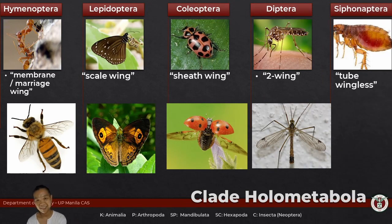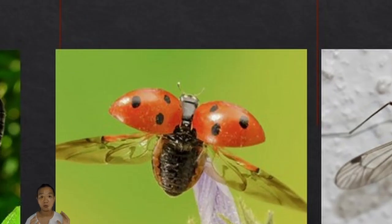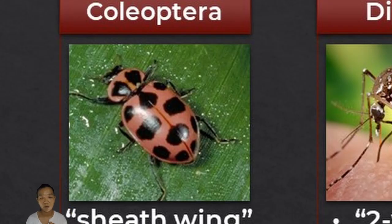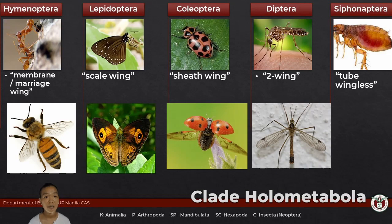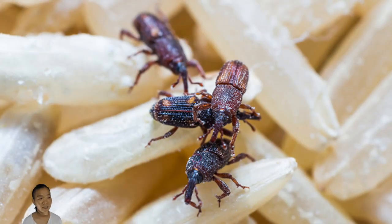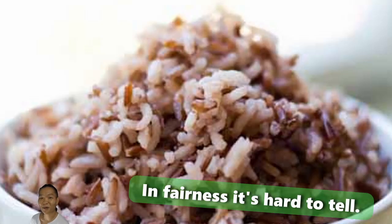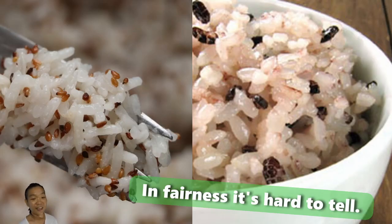Coleoptera, or the beetles — lady beetles, scarab beetles, weevils. Their forewings, called the elytra, are hardened like a shield. When folded over the abdomen, they form a neat, straight line along the middorsal axis of the body. Where else would you commonly find members of Coleoptera? In your rice — those bukbok weevils you find in your rice grains. What some people jokingly call 'red rice' or 'black rice' — extra protein.